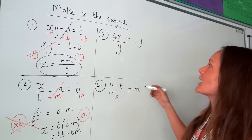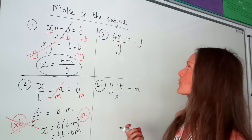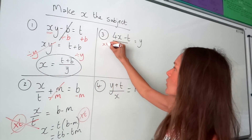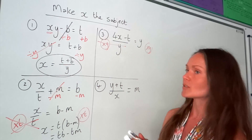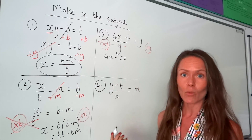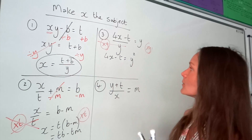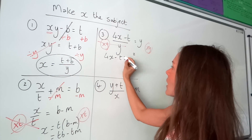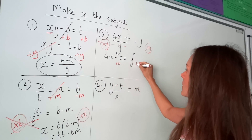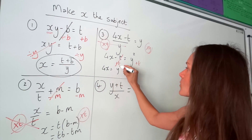On to number 3. We've got a fraction again, except this time it's one big fraction. My first step is just to get rid of that fraction. To get rid of the fraction, we multiply by the denominator, which is y. So we're going to multiply by y on both sides. The left-hand side just cancels and we're left with 4x minus t. On the right-hand side, y times y is y squared — so we can simplify that instead of leaving it as y times y. Now it's very similar to question 1: we're just undoing everything around x. The opposite of minusing t is to plus, so on the left-hand side it cancels and I'm left with 4x. On the right-hand side, I've now got y squared plus t.